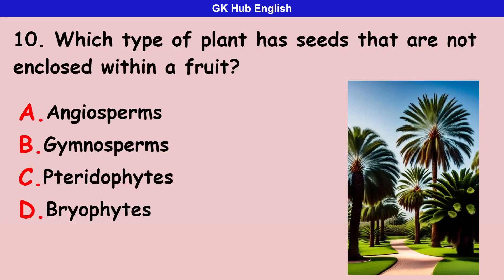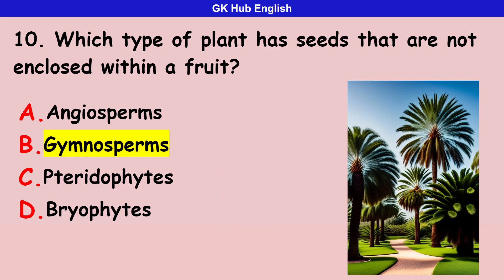Tenth question: which type of plant has seeds that are not enclosed within a fruit? Option A is angiosperms. Option B is gymnosperms. Option C is pteridophytes. Option D is dryophytes. Correct answer is gymnosperms.